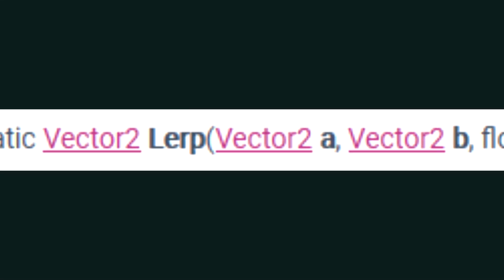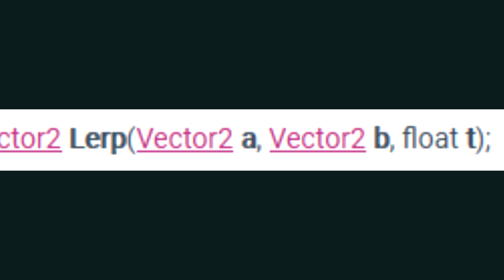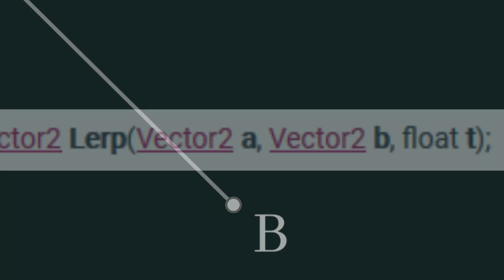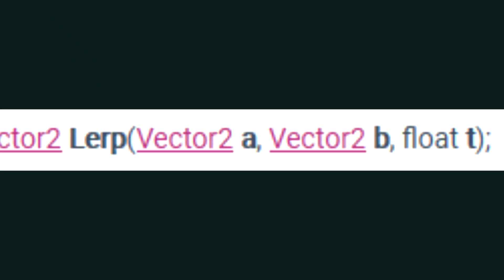The function also includes three input parameters called A, B and T. The first two parameters, A and B, represent the start and end points. In our example this would be the points A and B respectively. And then T is where we pass in the percentage value.